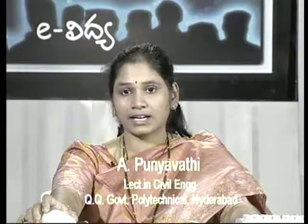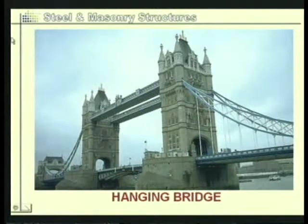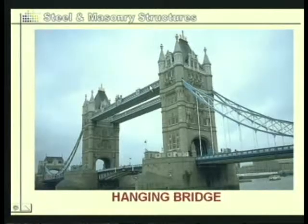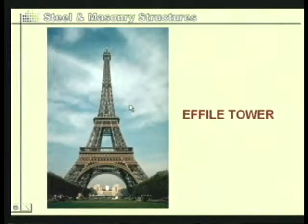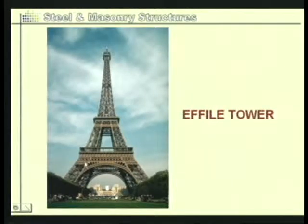Now let us look at photographs showing how separate sections are used to build massive steel structures. The first photograph shows a famous hanging bridge, where structural members are connected using individual sections. The next is the famous Eiffel Tower in Paris, which is mainly constructed of C, I, and other forms of rolled steel structures.